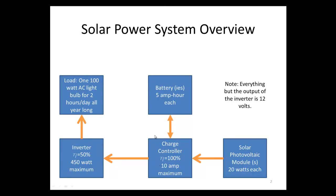We're also going to include some batteries in our system. We don't know how many yet. Batteries are rated in amp hours — one amp hour is providing one amp for one hour. Each battery can hold 5 amp hours, so we'll have to figure out how many we need. We also have solar photovoltaic modules, which take sunlight and make electricity, at 20 watts each. Everything but the output of the inverter is 12 volts DC — from the solar module to the charge controller, from the charge controller to the battery, and from the charge controller to the inverter. The inverter outputs 120 volts AC, just like what you use in your home.